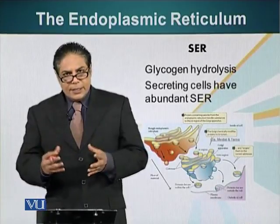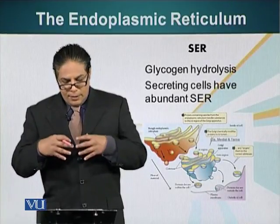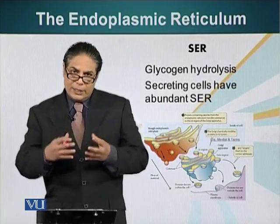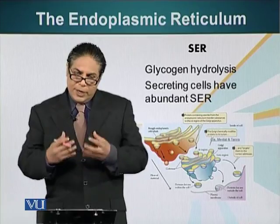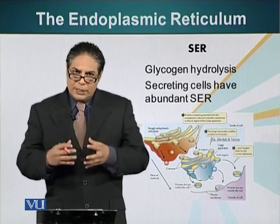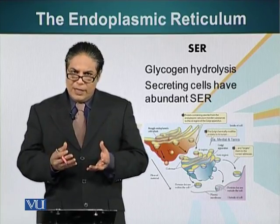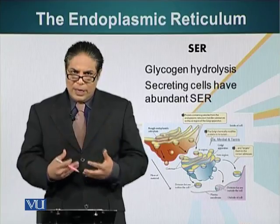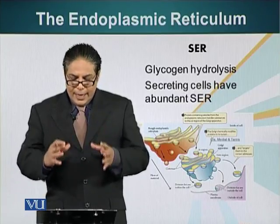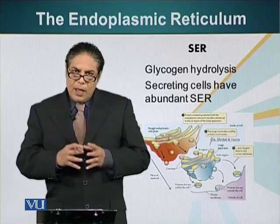Cells that are secreting — for example, cells that make and secrete antibodies, or cells secreting digestive enzymes for our digestive tract — have abundant endoplasmic reticulum.